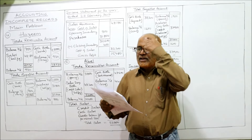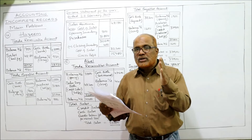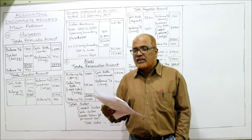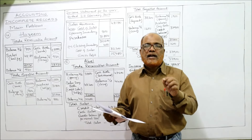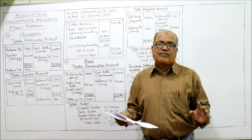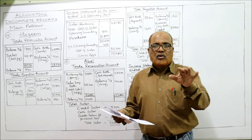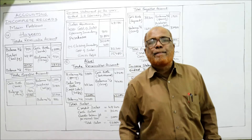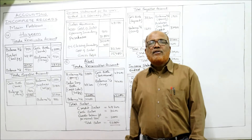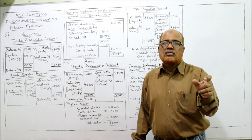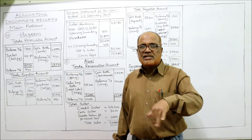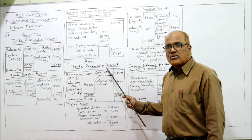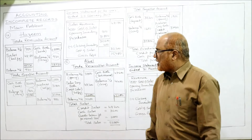We are required to calculate total sales, total purchases, and prepare an extract of the income statement for the year ended 31st March 2019 showing the trading section only — meaning we only find gross profit. As usual, we make the trade receivables account and trade payables account to find sales revenue and purchases.